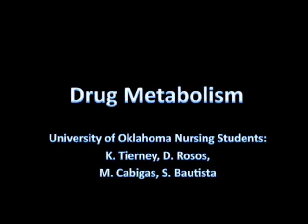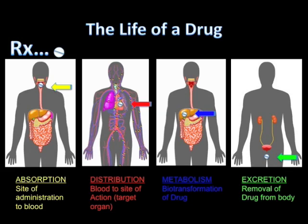Drug metabolism: the life of the drug. A drug first goes through absorption, which is the site of administration to the blood. Then it goes through distribution, which is the blood to the site of action or the target organ.